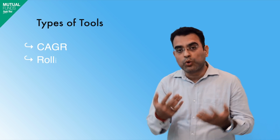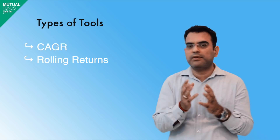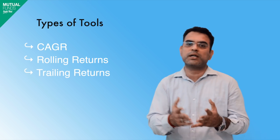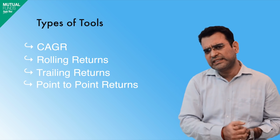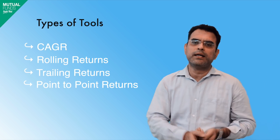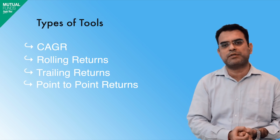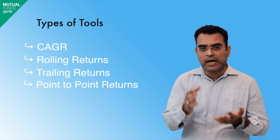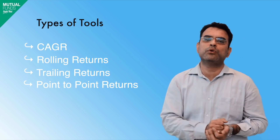The second tool is rolling returns. The third one is trailing returns. The fourth one is point-to-point returns. We will discuss each of these. CAGR is commonly known in this industry. Our next important point is rolling returns, which is very popular today but is not yet widely known, and no one in the industry has really provided its proper average.